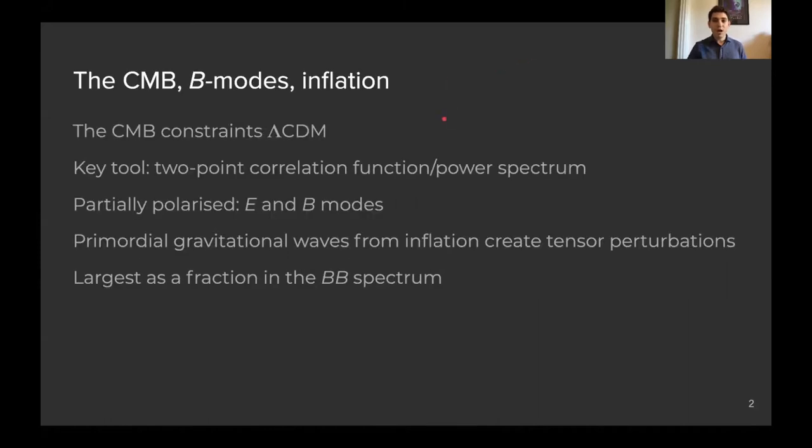Very briefly, we know the CMB, it's the oldest light in the universe, and it's a very good tool to constrain lambda CDM using its two-point correlation function, the so-called power spectra. Inflation theory generally predicts that there is some signal in the CMB from primordial gravitational waves, and so we hunt for that signal in the BB power spectrum from the polarized fraction of the CMB sky.